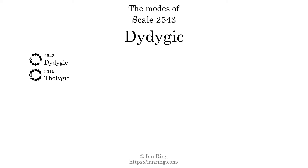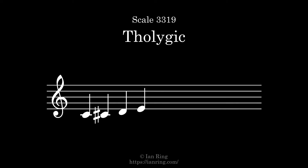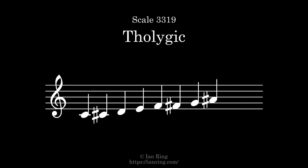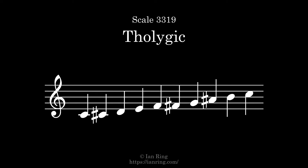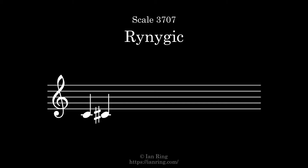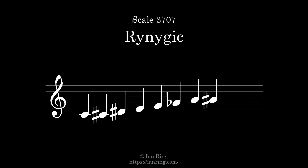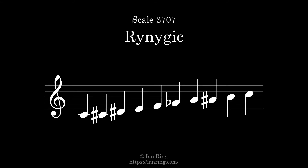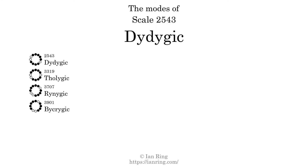The second mode is scale 3319, also known as the Ligic. It sounds like this. The third mode is scale 3707, also known as Rhianigic. It sounds like this. The fifth mode is scale 3907, also known as the Ligic. It sounds like this.